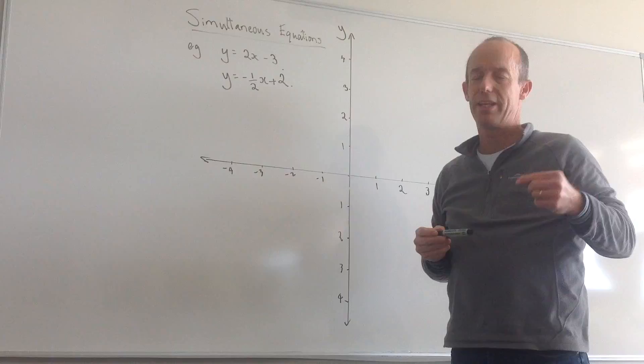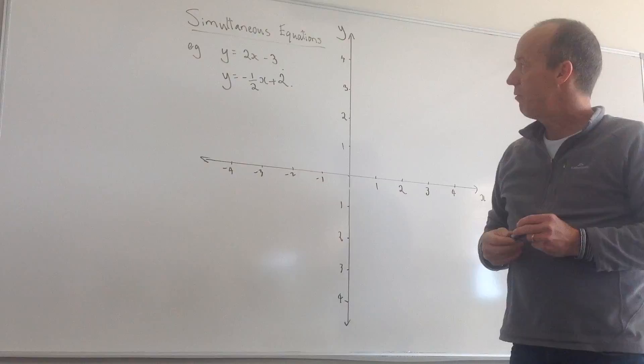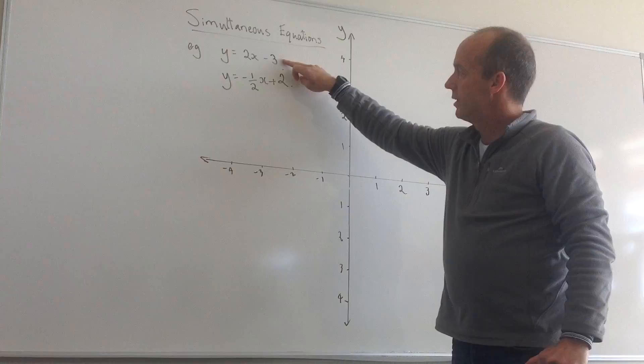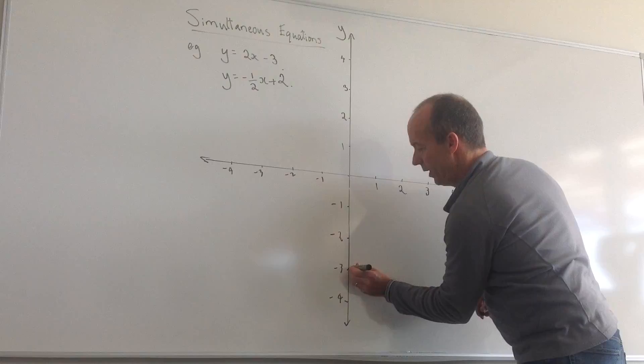I'm going to plot my first graph. We know looking at this, that this is going to have a y-intercept of minus 3, so I'll put in my y-intercept of minus 3. There's one point.